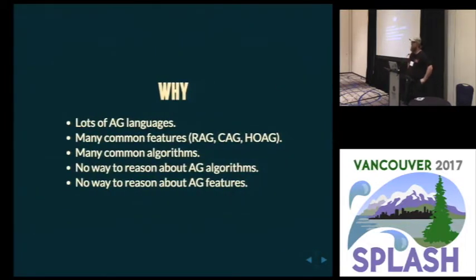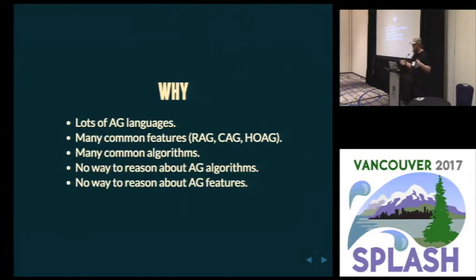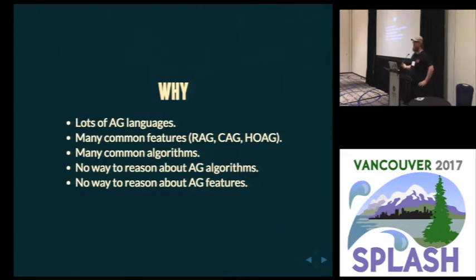What motivated this research is that there currently exist a number of different well-used, well-researched attribute grammar languages. These all share from a common pool of features: reference attribute grammars, circular, higher order, forwarding, and various things. They all have these similarities and there are also common algorithms, because attribute grammars are a particular way of writing a program. But there's no way to reason about these algorithms without reasoning about the implementation of the language we're using, no way to really reason about these features, compare them and prove things about them without getting bogged down in implementation details.